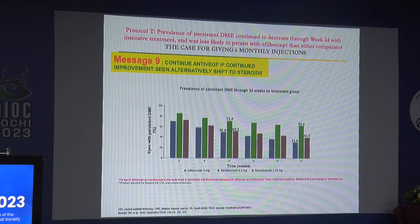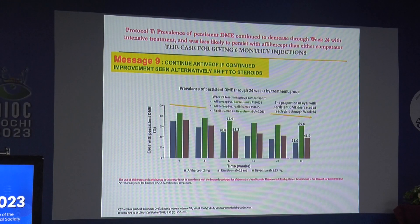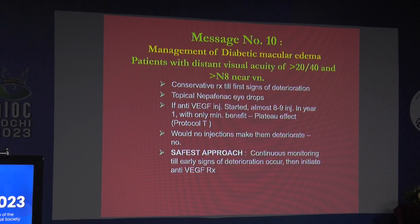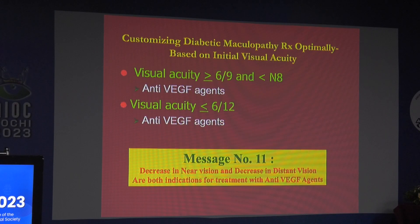You must continue anti-VEGFs if you see continued improvement. If the patient is not responding, the alternative is to shift to another anti-VEGF agent. If you find inflammatory biomarkers like cystoid spaces, hyperreflective dots, or neurosensory detachment, then you shift to steroids. Patients with distant visual acuity better than 20/40 or near vision of N8 — it is better to add nepafenac drops and control them medically, and monitor. If patients are deteriorating, you can initiate anti-VEGF injections, as shown by Protocol V.